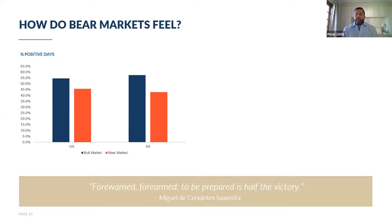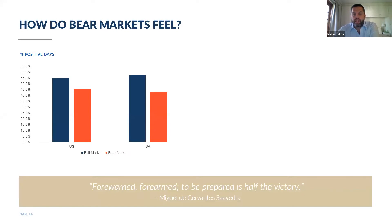Markets are not always going up when we're in a bull market, and not always going down when we're in a bear market. This chart looks at data for the US: in bull markets, roughly only slightly more than half of days are positive. In bear markets, roughly only slightly less than half of days are positive — even in bear markets. It's a pretty similar story for South Africa: about 56% of days are going up in bull markets and about 43% of days markets are going up even in bear markets.